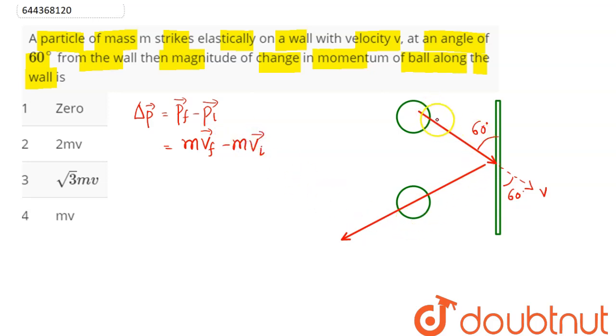So we can say here initial velocity was V. Final velocity will also be V since the collision is elastic. So M comes out common. Hence this is VF vector minus VI vector.